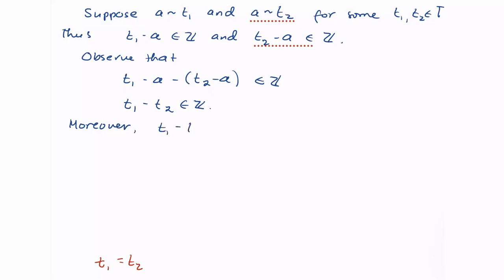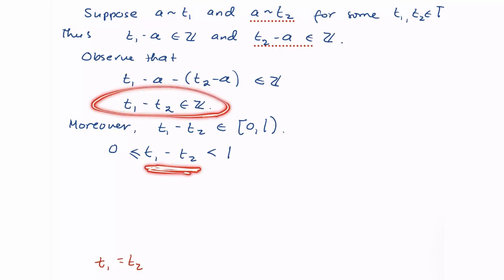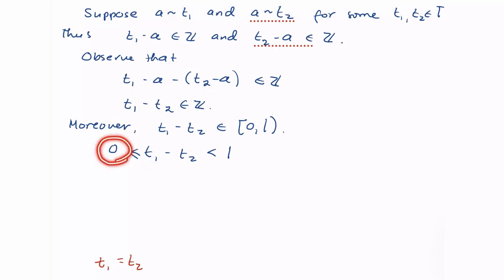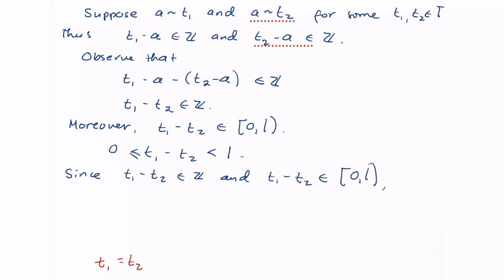Moreover, T1 and T2 are elements of [0, 1), so T1 − T2 is in the interval (−1, 1). This is an integer in that interval, so the only possibility is T1 − T2 = 0. Since T1 minus T2 is an integer belonging to this interval, we have no other option but T1 − T2 = 0, and therefore T1 equals T2. We have achieved our goal.